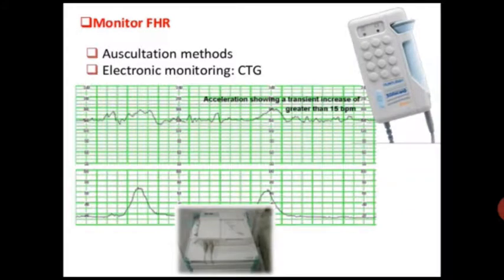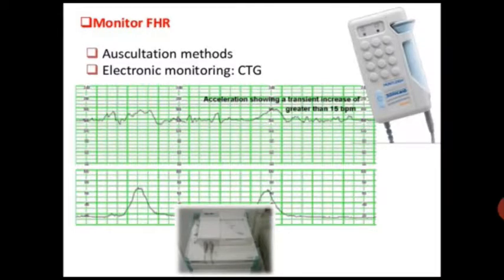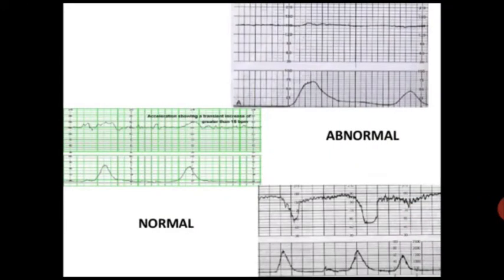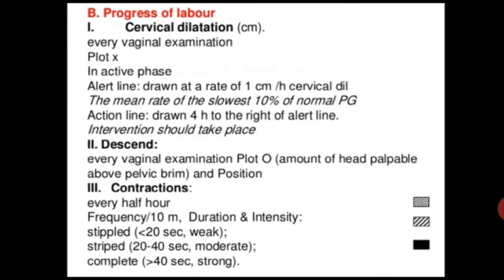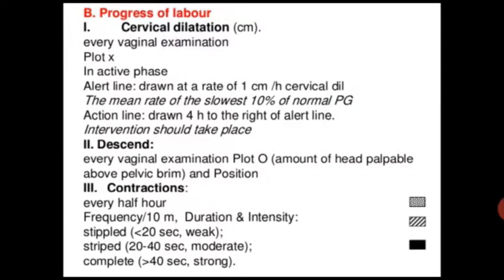Fetal heart rate is monitored through a CTG machine. It can be assessed by auscultation method or electronic monitoring. The CTG provides normal and abnormal findings for fetal well-being assessment, followed by progress of labor monitoring.